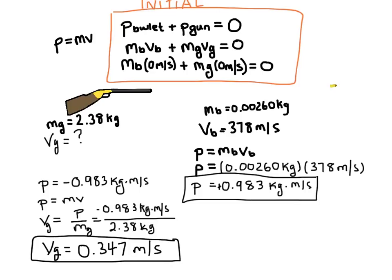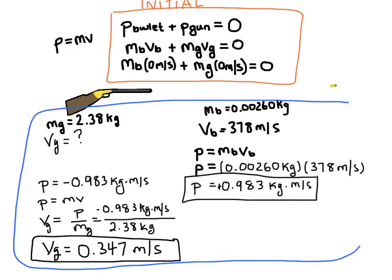And I get a velocity of 0.347 meters per second. And so there's the velocity of the gun. We can see it's very, very small. And so what we just calculated here is the after momentum. And again, if we add up the momentum of the gun and the momentum of the bullet, if we add them together, we get zero.